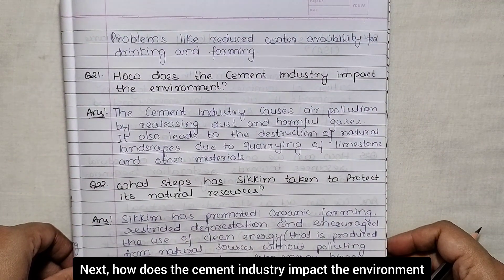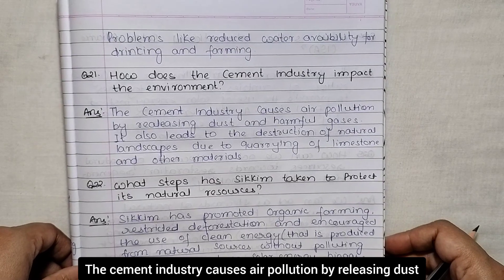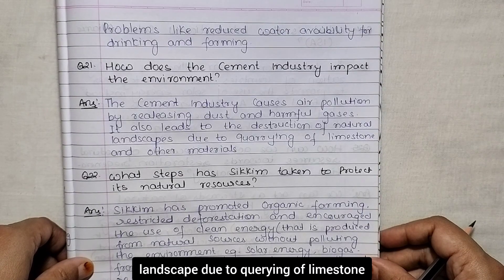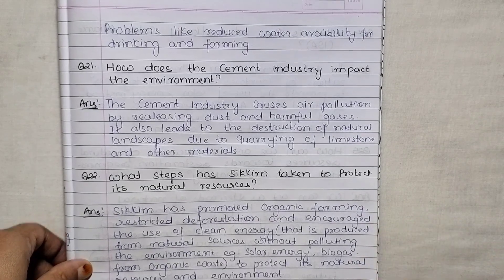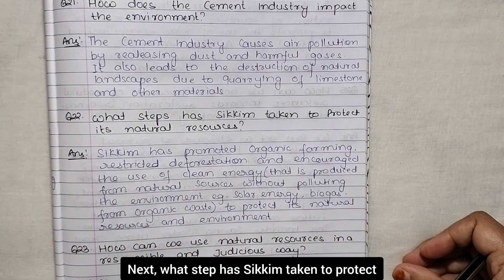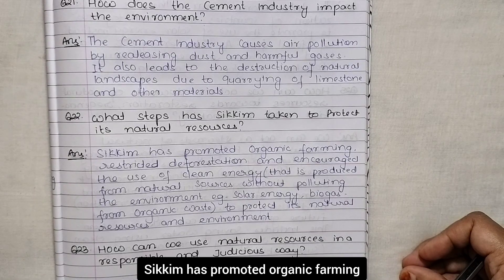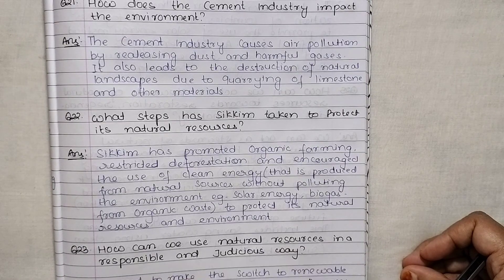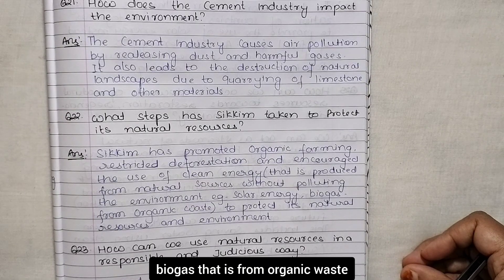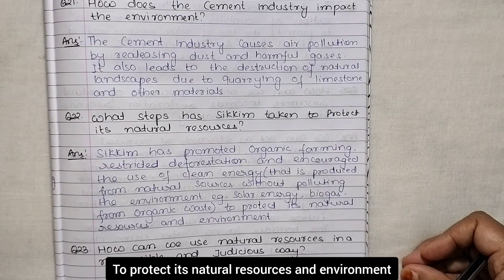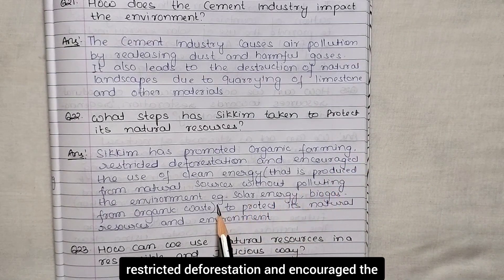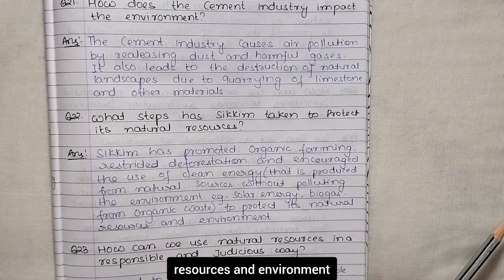Next: how does the cement industry impact the environment? The cement industry causes air pollution by releasing dust and harmful gases. It also leads to the destruction of natural landscapes due to quarrying of limestone and other materials. Next: what steps has Sikkim taken to protect its natural resources? Sikkim has promoted organic farming, restricted deforestation and encouraged the use of clean energy — energy produced from natural sources without polluting the environment, such as solar energy.